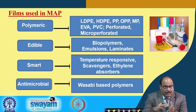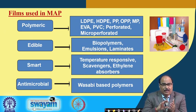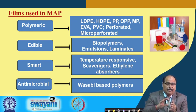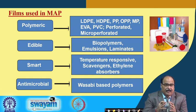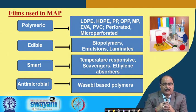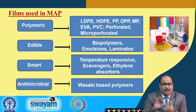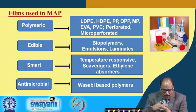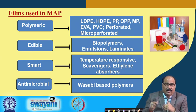Even functional films made antimicrobial — by coating some antimicrobial substances such as nisin onto the packaging material — can be used. When food materials are packed in such packages, it causes surface sterilization of the food and extends shelf life. Wasabi-based polymers are an example of this type of antimicrobial packaging.